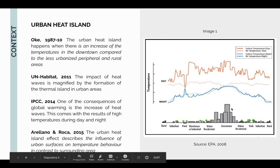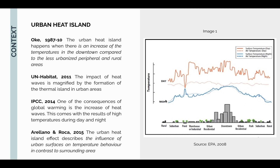As we can see on the picture on the right, we can see a city with temperatures during day and during night, and especially in the urban area, temperatures at night are the highest. This doesn't happen in the greener areas surrounding the city. The urban heat island happens when there is an increase of temperatures in the downtown compared to the less urbanized peripheral and rural areas. The impact of heat waves is magnified by the formation of the thermal island in urban areas, and one consequence of global warming is the increase of heat waves.